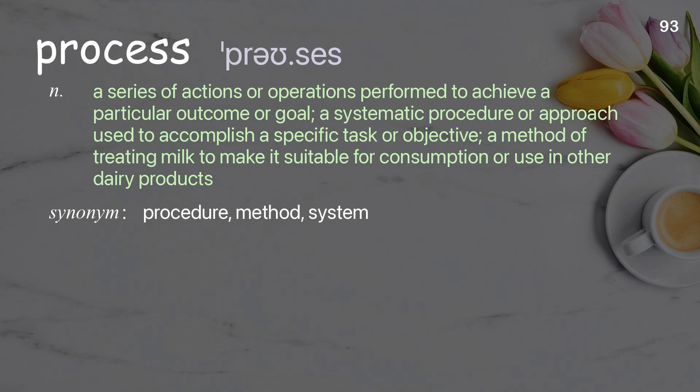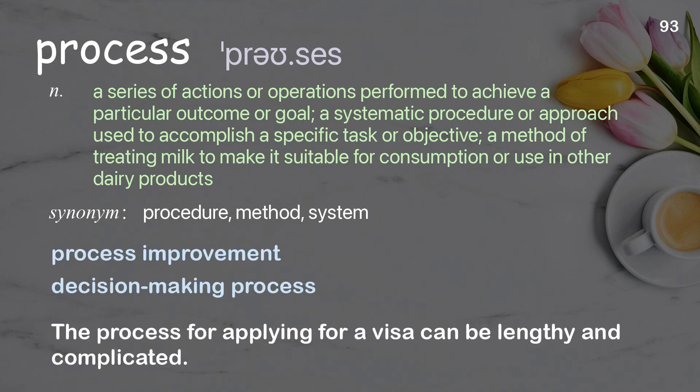Process: a series of actions or operations performed to achieve a particular outcome or goal; a systematic procedure or approach used to accomplish a specific task or objective. Examples: the process for applying for a visa can be lengthy and complicated.